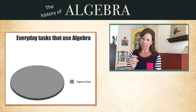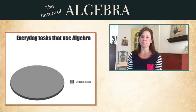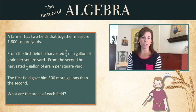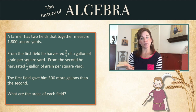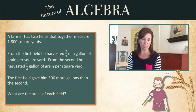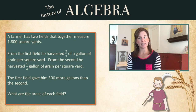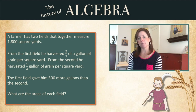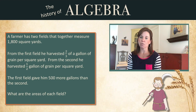For example, check out this situation. A farmer has two fields that together measure 1,800 square yards. From the first field, he harvested two-thirds of a gallon of grain per square yard. From the second, he harvested half a gallon of grain per square yard. The first field gave him 500 more gallons than the second. What are the areas of each field?